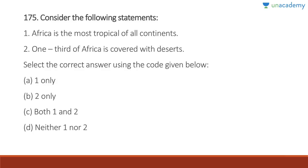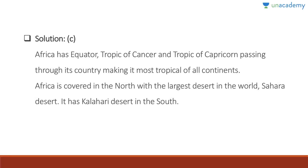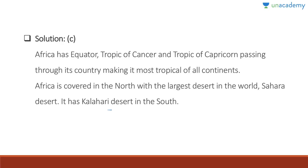Question 175: Africa is the most tropical of all continents — it has the Tropic of Cancer, Tropic of Capricorn, and the equator passing through it, so most of its area is tropical — correct. One third of Africa is covered with deserts — also correct. Answer is C, both one and two. Africa is covered in the north by the Sahara Desert, the world's largest, and has the Kalahari and Namib Deserts in the south.